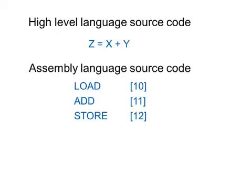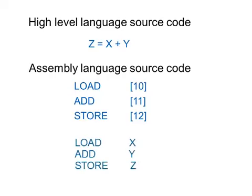Referring to memory addresses by numbers is called direct addressing. Some assembly languages will allow you to use what's called symbolic addresses. So for example I might say: load X, add Y, store Z. That depends on the language.